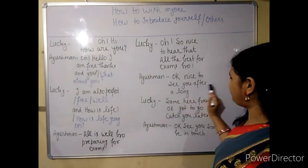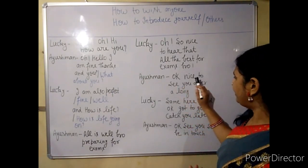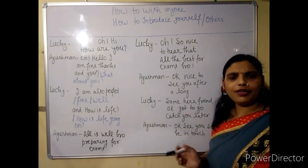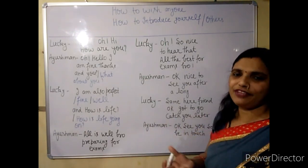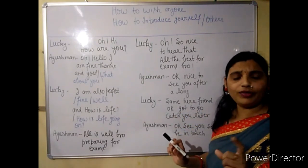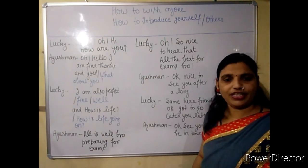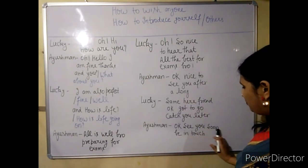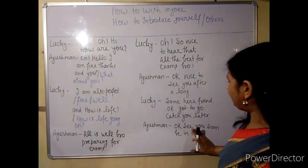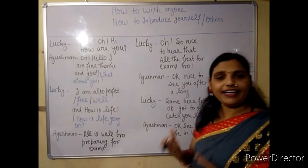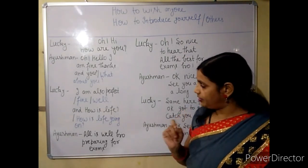Ayushman will say: 'Okay, nice to see you after long. Nice to see you after long.' Lucky will say: 'Same here.' This is very common — 'same here' means that whatever you are feeling meeting me, I am feeling the same meeting you. Then: 'Got to go' — this is a very common phrase meaning 'I have to leave.' And: 'Catch you later' — meaning 'I will meet you later.' Ayushman will say: 'Okay, see you soon, be in touch.'